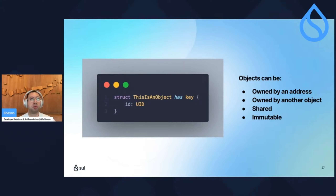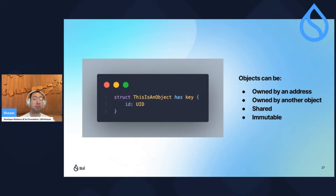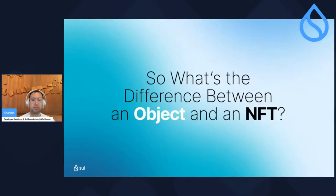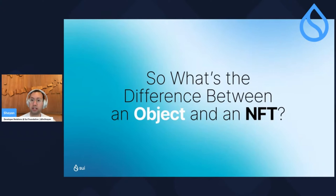If you're creating a game and you want certain attributes to be visible to everybody but you don't want anybody to be able to change or mutate them, that would be an immutable object. And as we said earlier, there is technically no difference between an object and an NFT — all objects by definition are technically non-fungible.